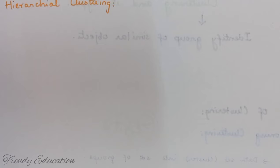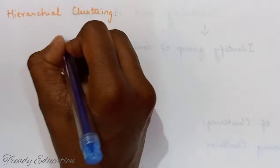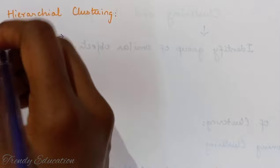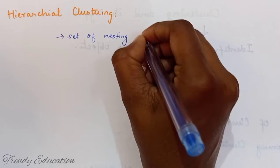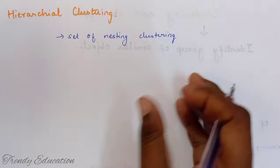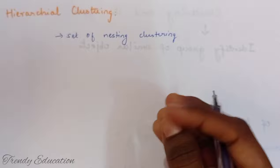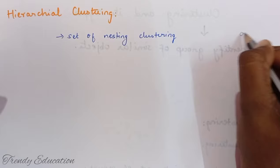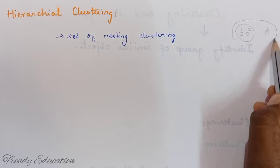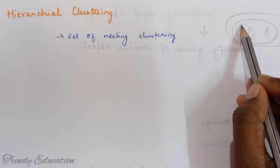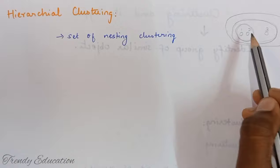Now coming to hierarchical clustering. This is similar to partitioning clustering, but here we do not need to pre-specify the number of clusters. What we build here is a set of nesting clusters — a cluster that is clustered into another cluster. For example, objects one and two form a cluster, then that cluster combines with three to form another, and then with four, so one cluster is nested into another.